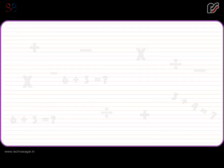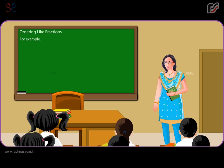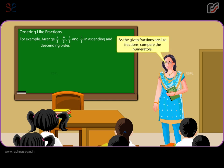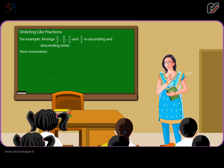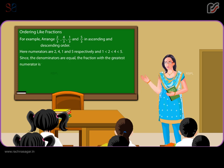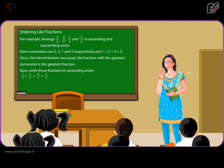Ordering of fractions. Ordering like fractions. For example, arrange 2 by 3, 4 by 3, 1 by 3 and 5 by 3 in ascending and descending order. As the given fractions are like fractions, compare the numerators: 1, 2, 4, 5. Since the denominators are equal, the fraction with the greatest numerator is the greatest. Ascending order: 1 by 3 < 2 by 3 < 4 by 3 < 5 by 3. Descending order: 5 by 3 > 4 by 3 > 2 by 3 > 1 by 3.